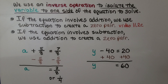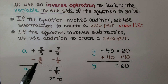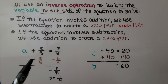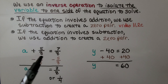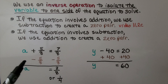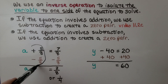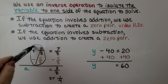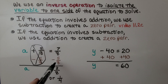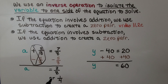We use an inverse operation to isolate the variable to one side of the equation. If the equation involves addition, we use subtraction to create a zero pair. We have a plus 5 eighths is equal to 7 eighths. Because that's a plus, we're going to subtract 5 eighths from both sides, creating a zero pair we can eliminate. We subtract 5 eighths from 7 eighths and get 2 eighths. We know a is equal to 2 eighths, and we can simplify that to 1 fourth.